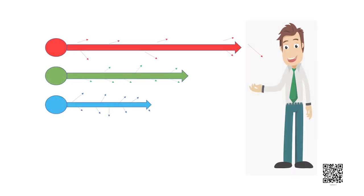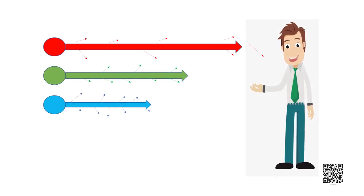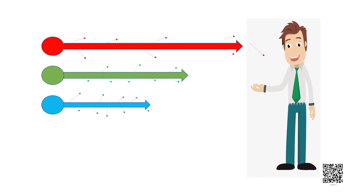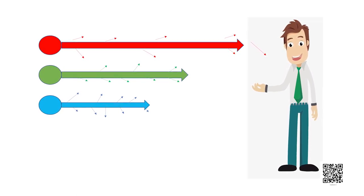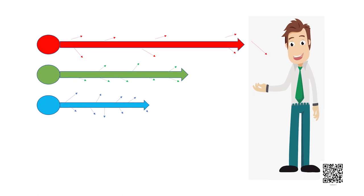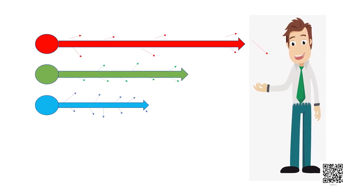You might have also observed that danger signals are painted red in colour. Do you know why? Red is least scattered by fog or smoke, and therefore it can be seen in the same colour at a distance.